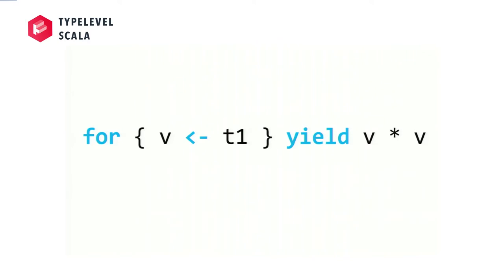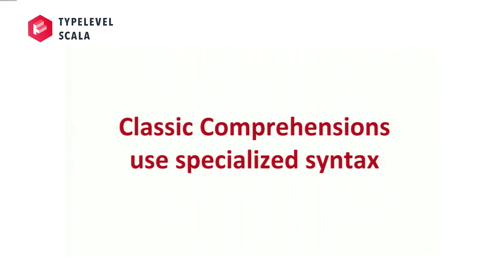So, that's the thing we all know, the for comprehension has a for keyword and a yield, and it's very specialized syntax for working with monads. It can be easier than the maps and flat maps, right? Let's look at this. So, T could be, so let's say task is one of the monads, and you get the value V out of T1, and then you do something with the value.